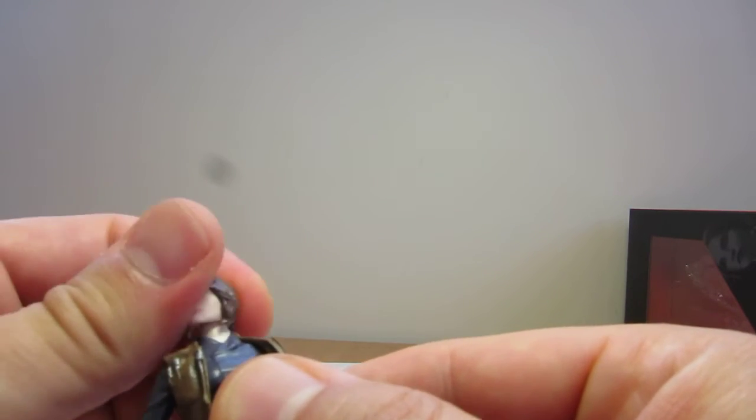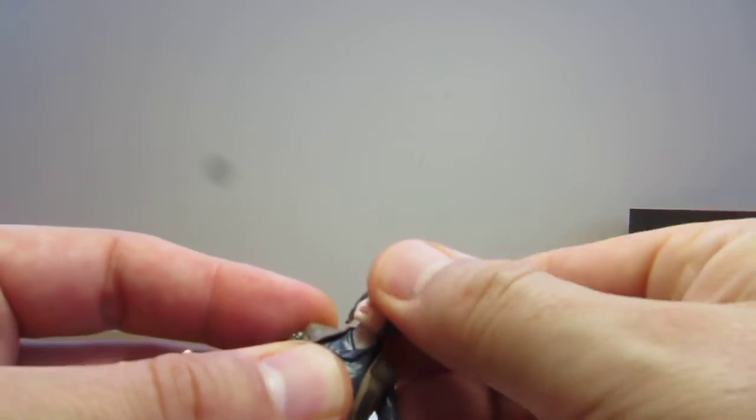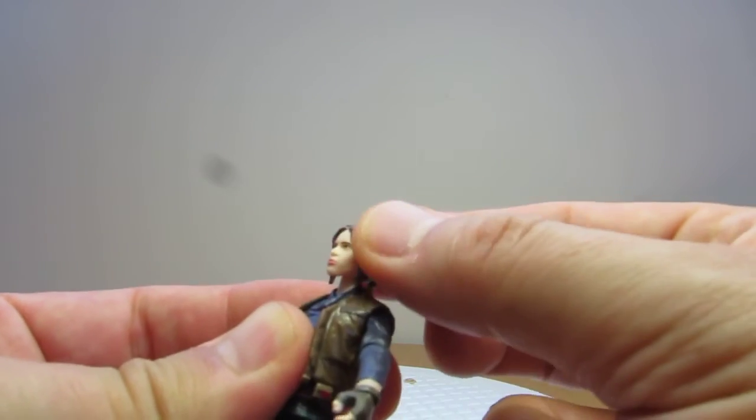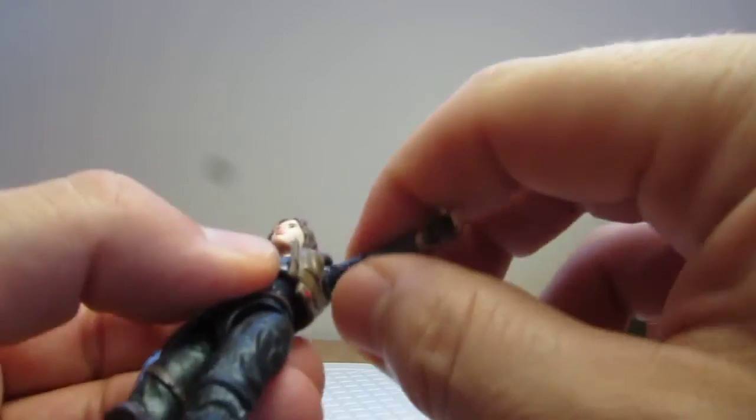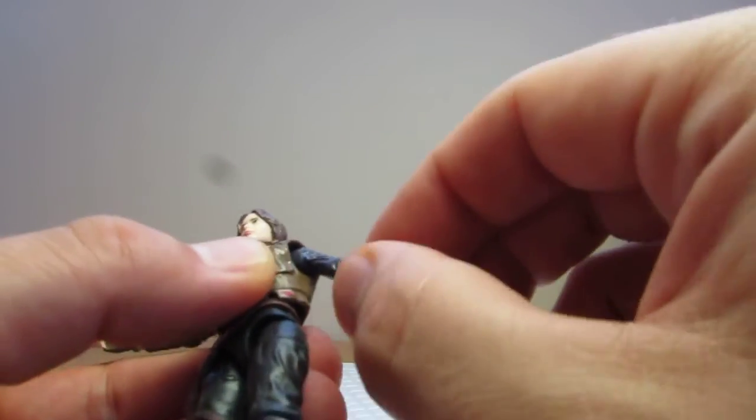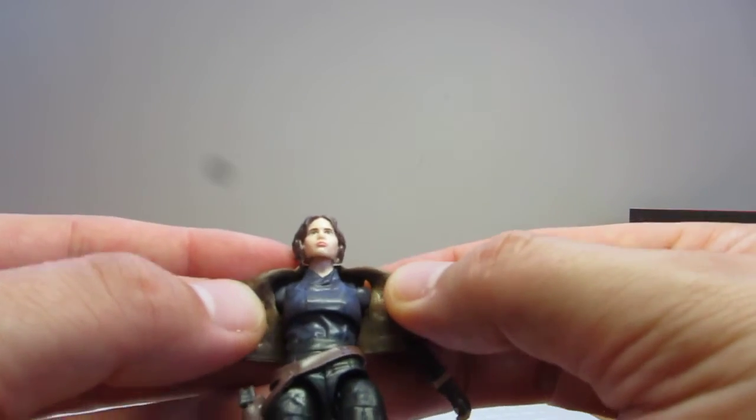So for articulation on this little figure, you've got a ball jointed head that rotates around. Full movement, though it can't really move forward or back much. It's kind of limited, that's as much as you'll get. You've got full articulation on the arms so they will swivel all the way around, no limit. The waistcoat comes off.